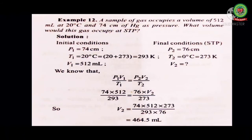Final conditions P2 T2: in the numerical they have mentioned STP, so P2 will be 76 cm of mercury, T2 is 273 Kelvin, and V2 we need to find out.